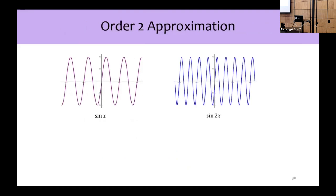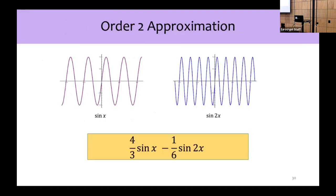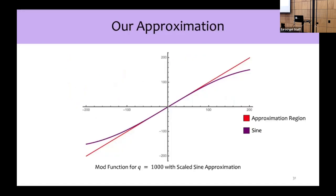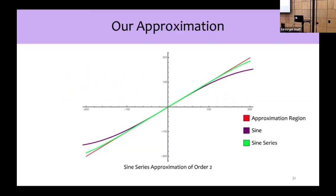As an example, consider the order-2 approximation: the linear combination (4/3)sin(x) − (1/6)sin(2x). Plotting this approximation alongside the red approximation region and sine in purple for comparison, our sine series approximation of order 2 already does much better than sine and is very close to covering the red approximation region.